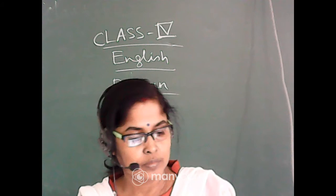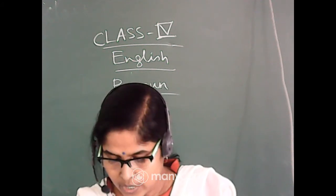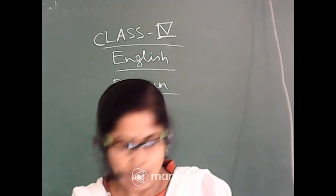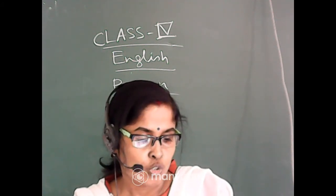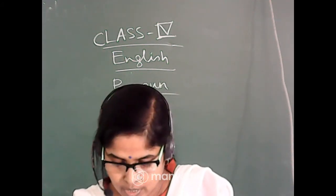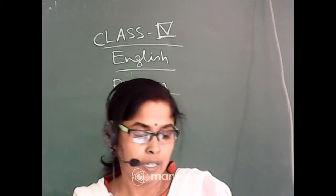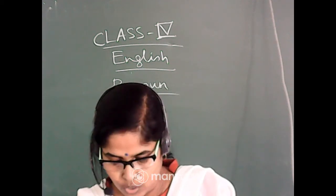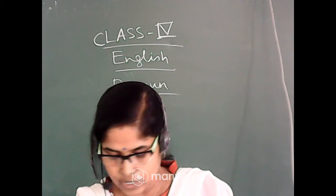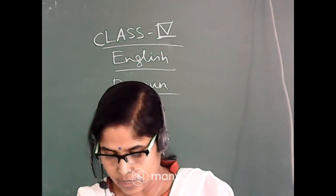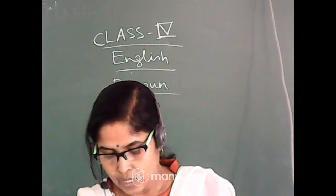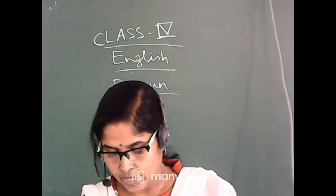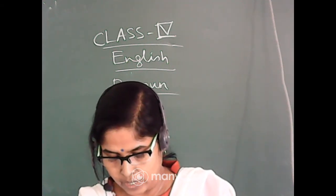Number one: Water and energy are valuable. Circle 'water' and circle 'energy' — water and energy are in circles. Underline 'they'.